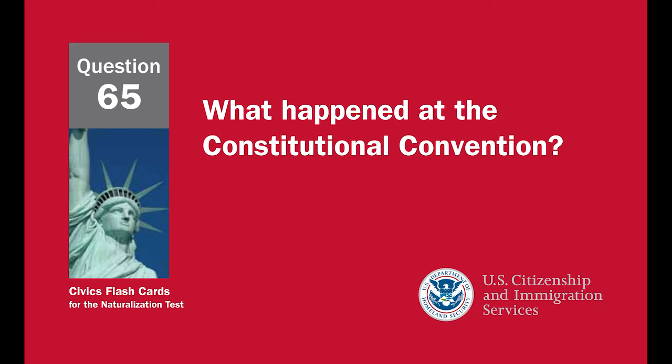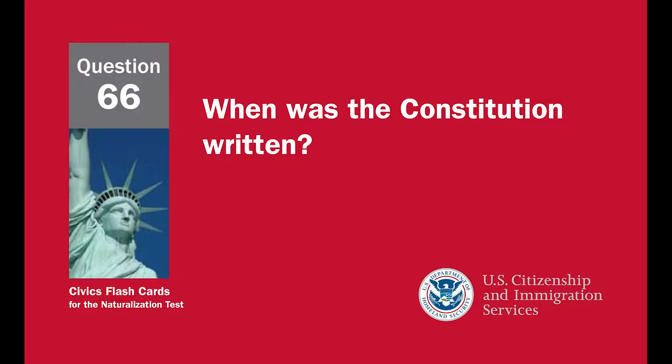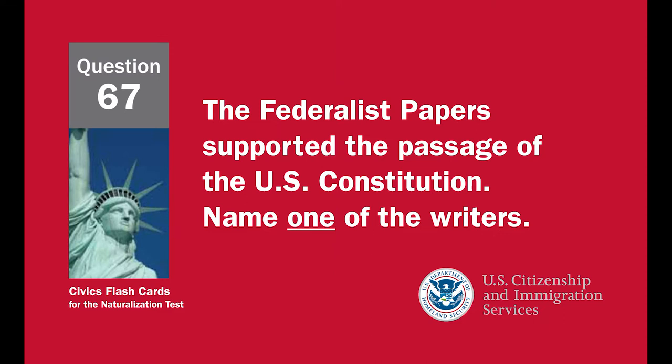What happened at the Constitutional Convention? The Constitution was written — the Founding Fathers wrote the Constitution. When was the Constitution written? 1787. The Federalist Papers supported the passage of the U.S. Constitution.